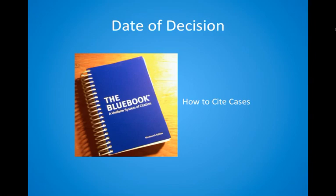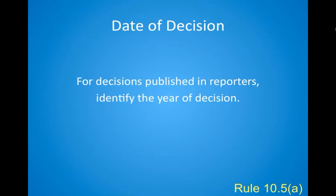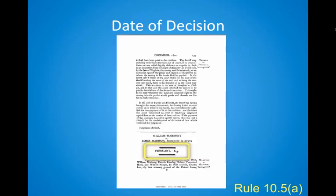Open your Blue Book to Rule 10.5. Always include the year the case was decided whenever citing to a case published in a reporter. Here is Marbury v. Madison, published in the United States Reports. The date of decision appears just after the case name — it is 1803.